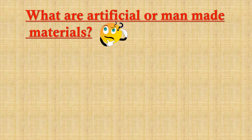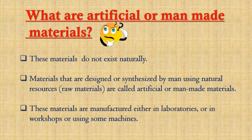Now, what are artificial or man-made materials? These materials do not exist naturally. Materials that are designed or synthesized by man using natural resources are called artificial or man-made materials. These materials are manufactured either in laboratories, workshops, or using some machines.